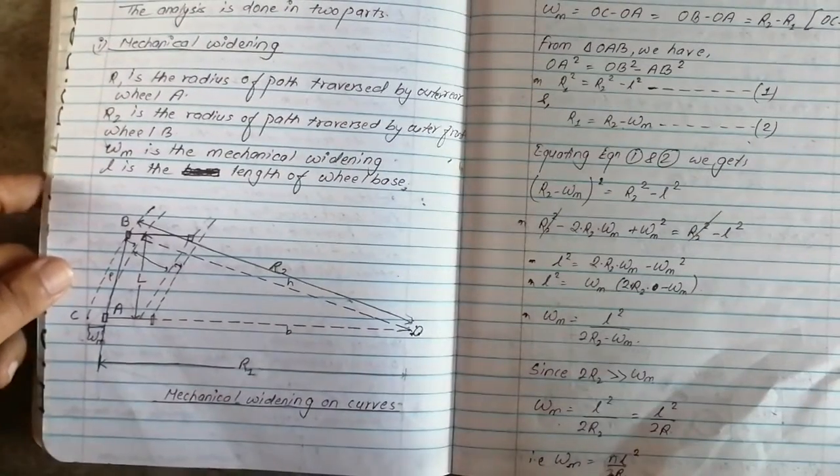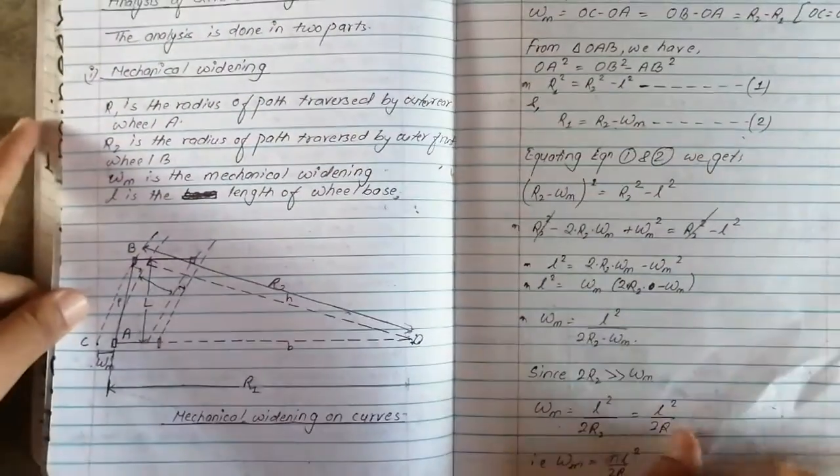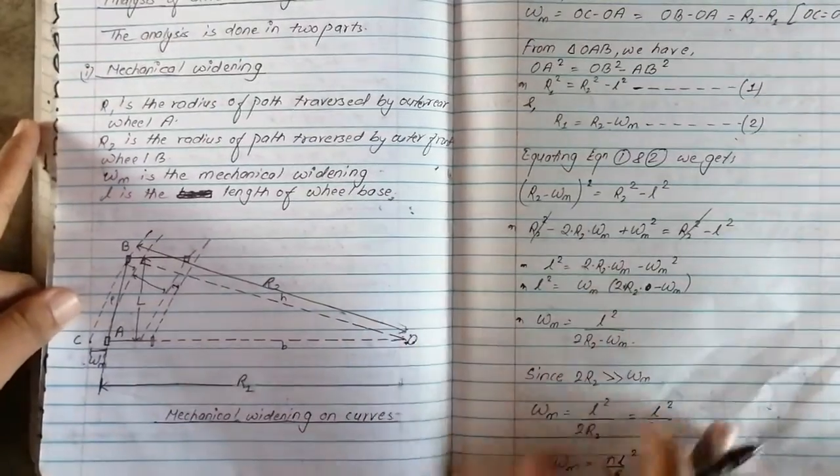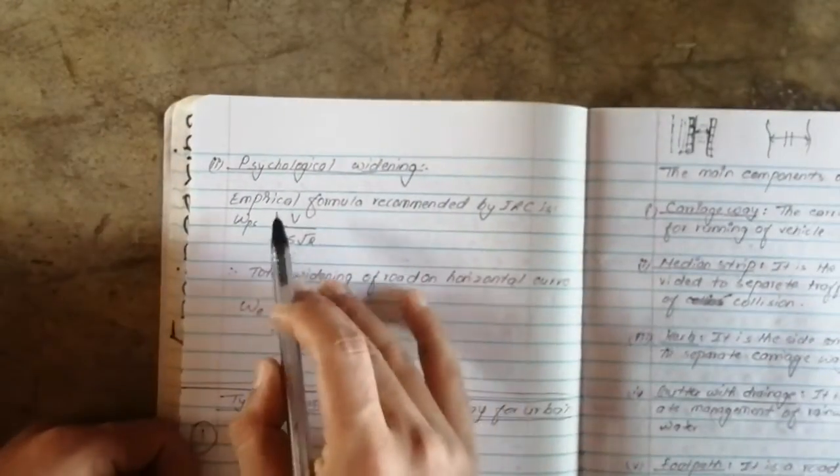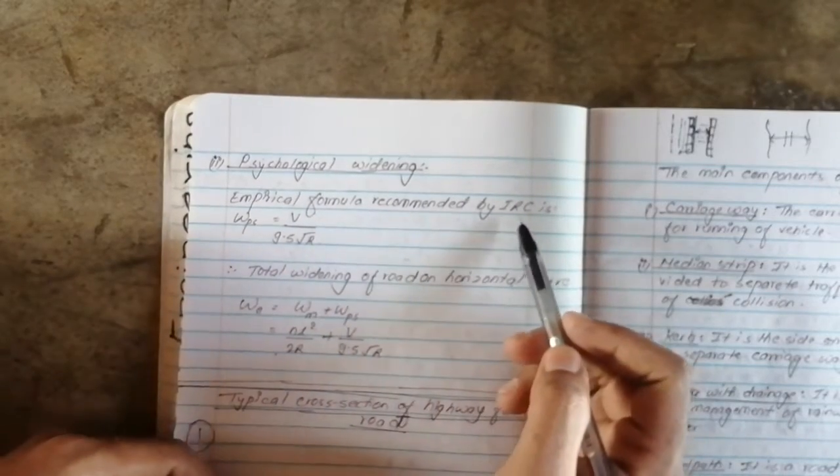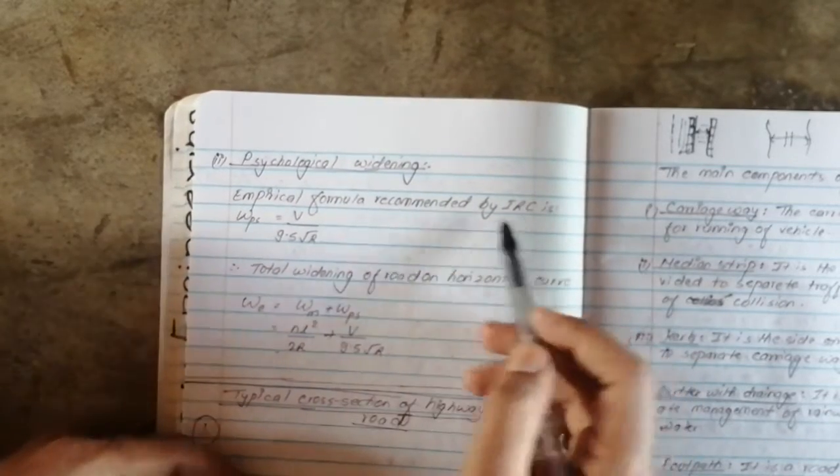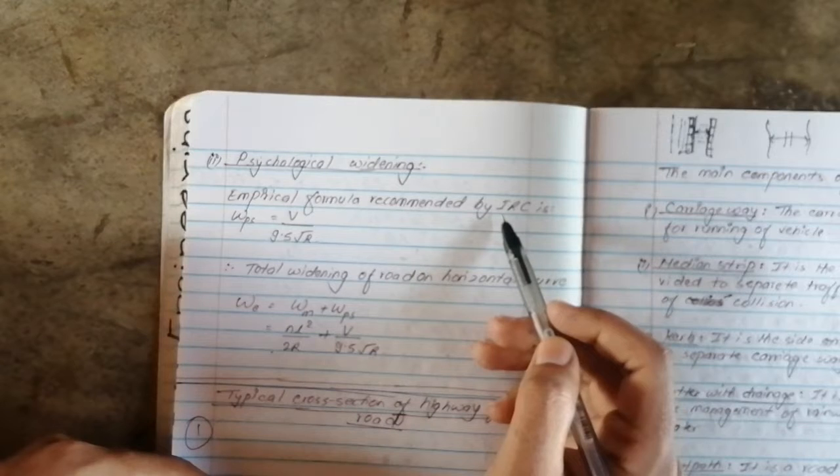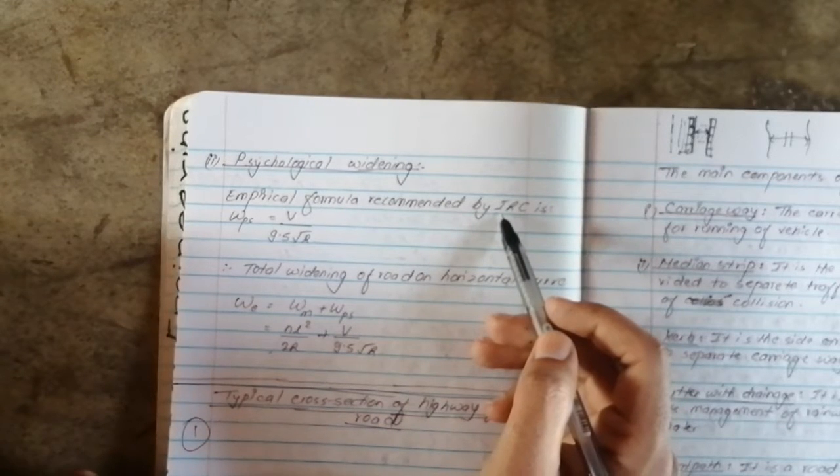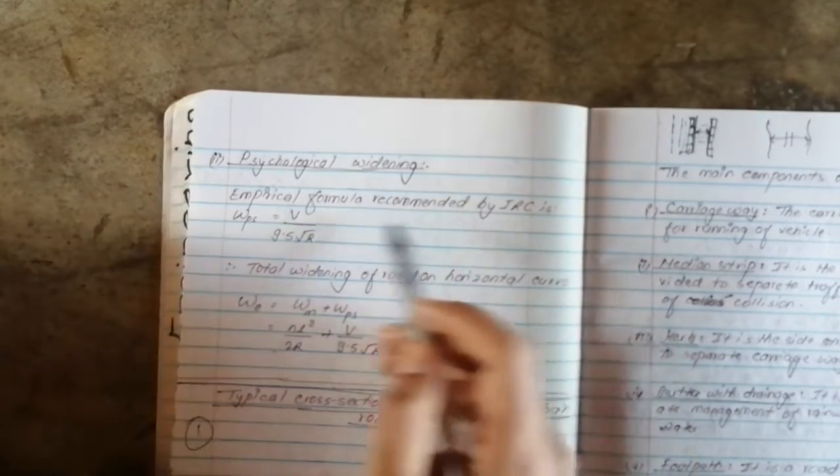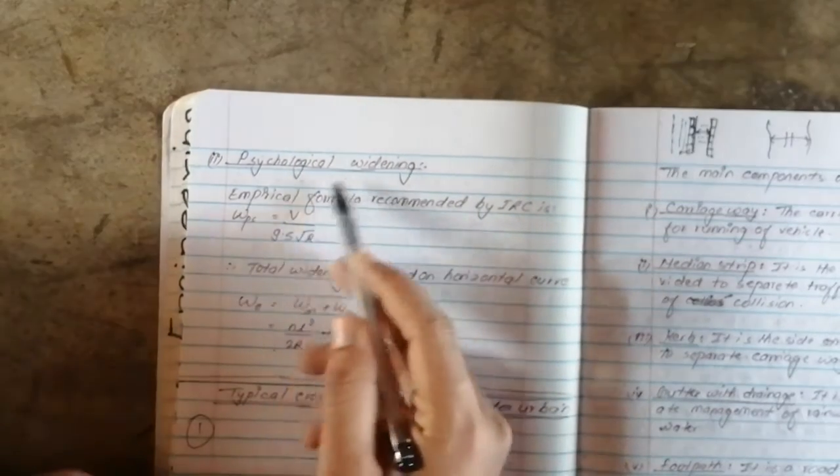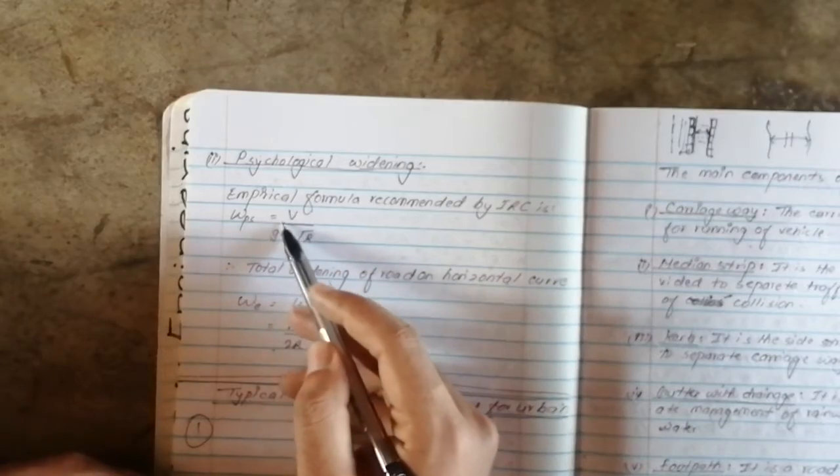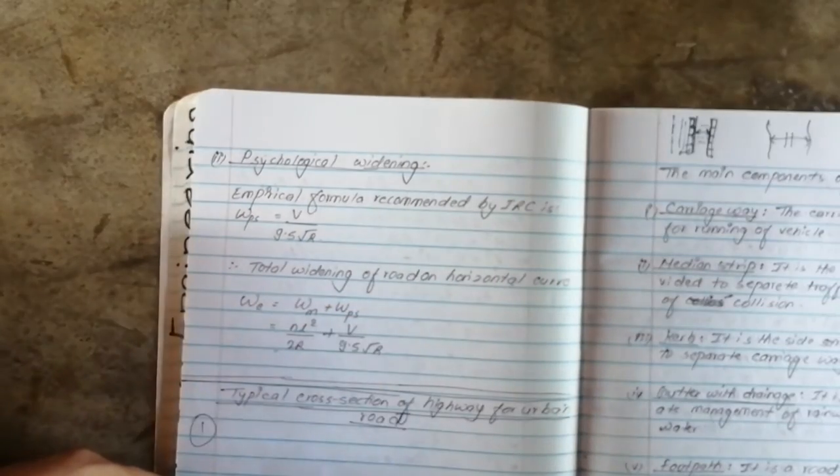This is the value of psychological widening. The empirical formula recommended by IRC, the Indian Roads Congress, is WPS equals V by 9.5 square root of R.